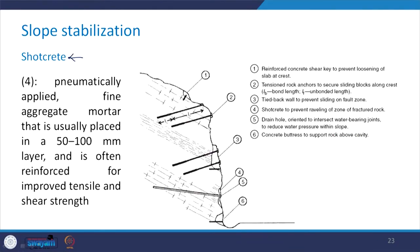The fourth and very commonly adopted slope stabilization measure is the placement of shotcrete. This is pneumatically applied fine aggregate mortar that is usually placed in a 50 to 100 millimeter thick layer and is often reinforced to improve tensile and shear strength. It is also used in case of tunnels.